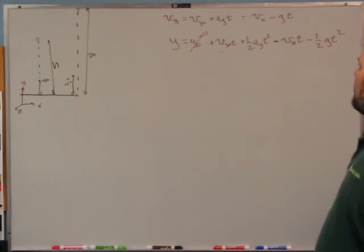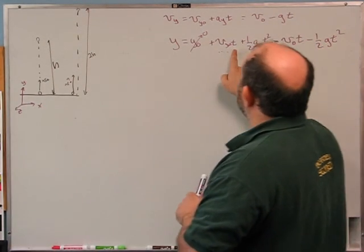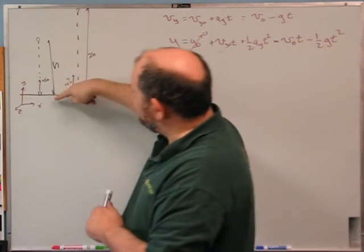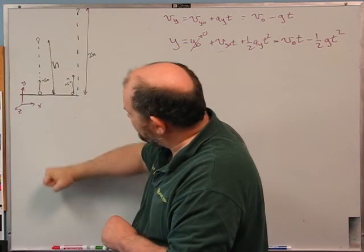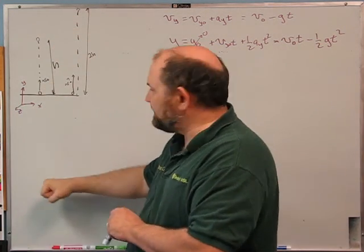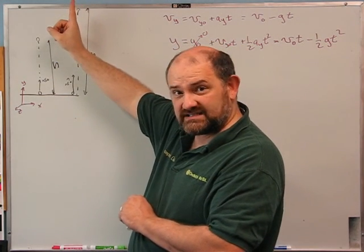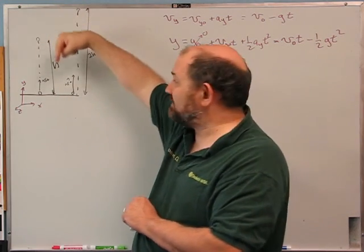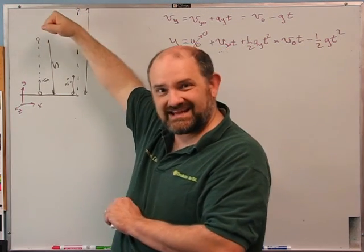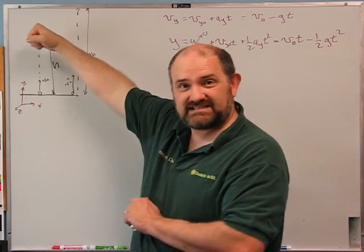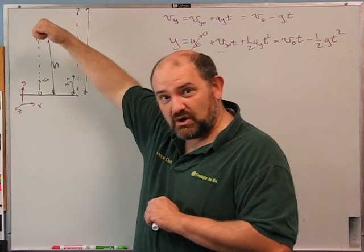At the top of the trajectory, the ball is no longer moving up or down — for just that instant, vy = 0. If the ball was still moving up it would get higher; if moving down, it would have been higher. So at the top, vy = 0 and y = h. Plugging into vy = v0 − g·t gives t = v0/g.